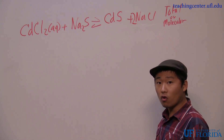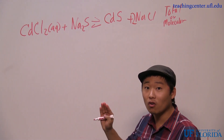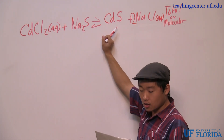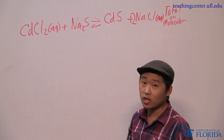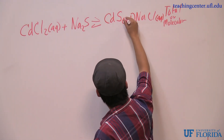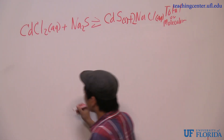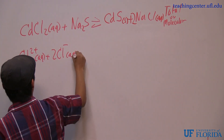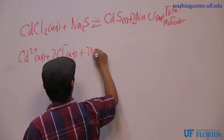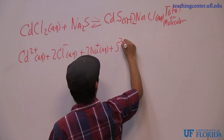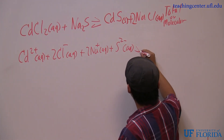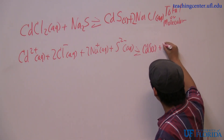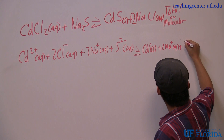This is what the equation looks like in full. When you dissolve, everything that is dissolved in the reaction gets separated. A quick note: cadmium sulfide, if you look at your solubility rules, is a solid. So what happens now is we write: Cd²⁺(aq) + 2Cl⁻(aq) + 2Na⁺(aq) + S²⁻(aq) → CdS(s), because the solid does not separate, plus 2Na⁺(aq) + 2Cl⁻(aq).